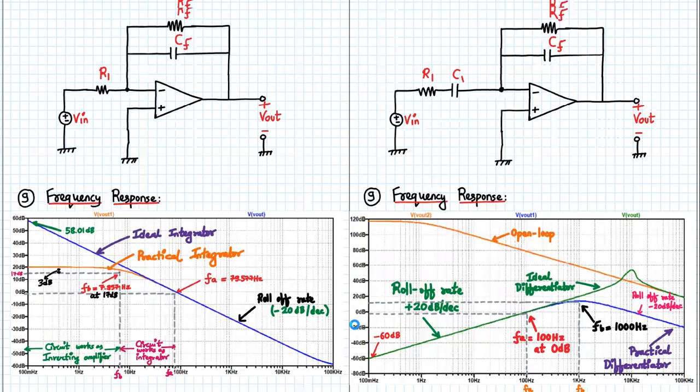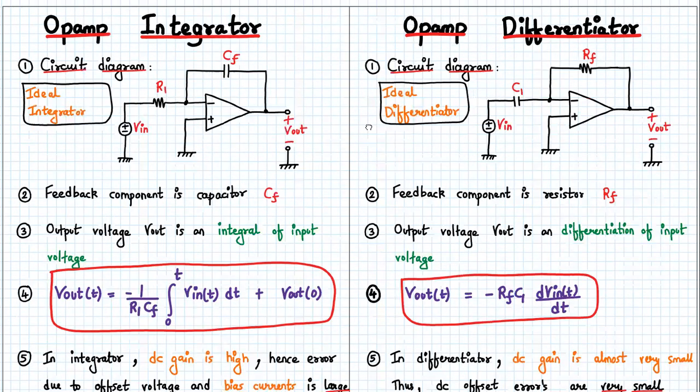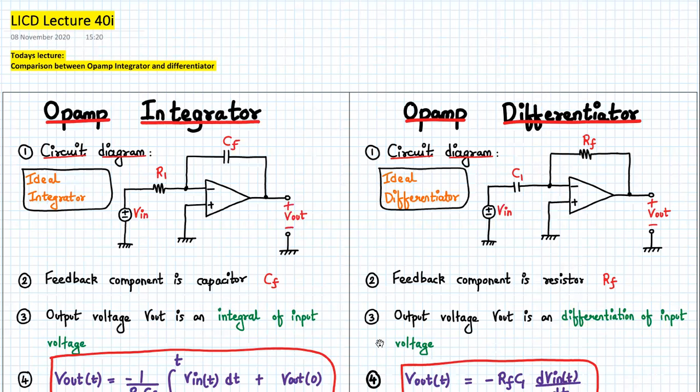This completes the 11 points of difference between the op-amp integrator and op-amp differentiator. We have covered everything about the integrator and differentiator using ideal op-amp, analyzed the practical op-amp, studied the design, and compared ideal integrator, practical integrator, ideal differentiator, and practical differentiator. That completes the topic. Thank you for joining, have a good day.